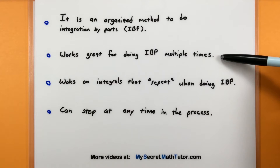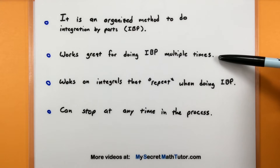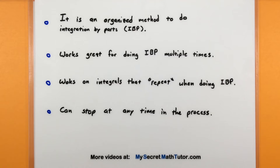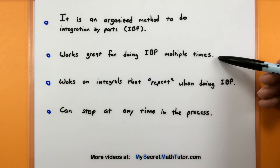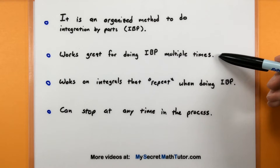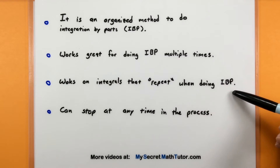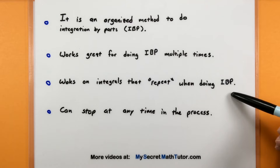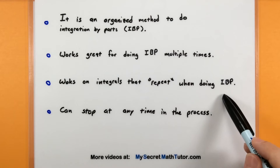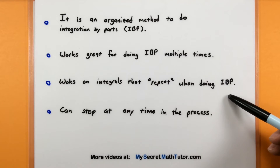Since it really is integration by parts, it really shines for those problems where you have to do integration by parts multiple times. There are a few problems where you might have to do it over and over again, and this table really allows you to take all that information and organize it and be able to spit out an answer very fast. It also works for integrals that repeat themselves when doing integration by parts — these tend to be some very frustrating integrals, but this method still works just fine for them.